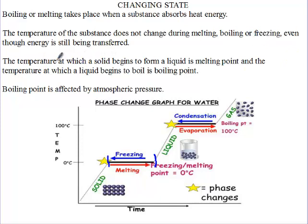The temperature at which a solid begins to form a liquid is what we call melting point. So the point where the ice begins to change to liquid water is what we call melting point.